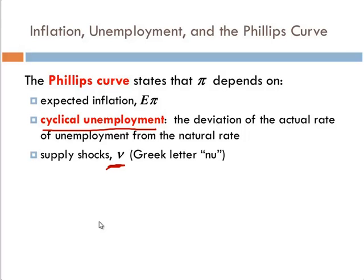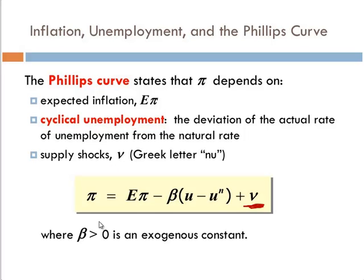Exogenous shocks to supply, like for example, we have oil prices go up all of a sudden, or a natural disaster destroys infrastructure, something like that. When we formulate this, we end up with inflation equals a function of expected inflation, some parameter times the spread between the unemployment rate and the natural rate of unemployment, and these exogenous supply shocks.